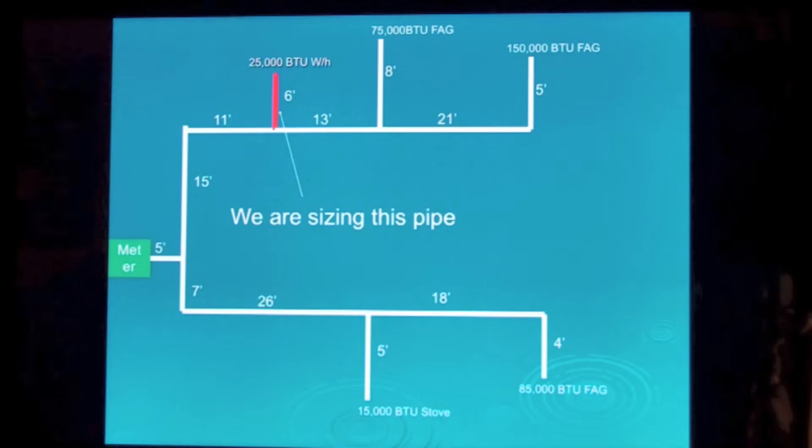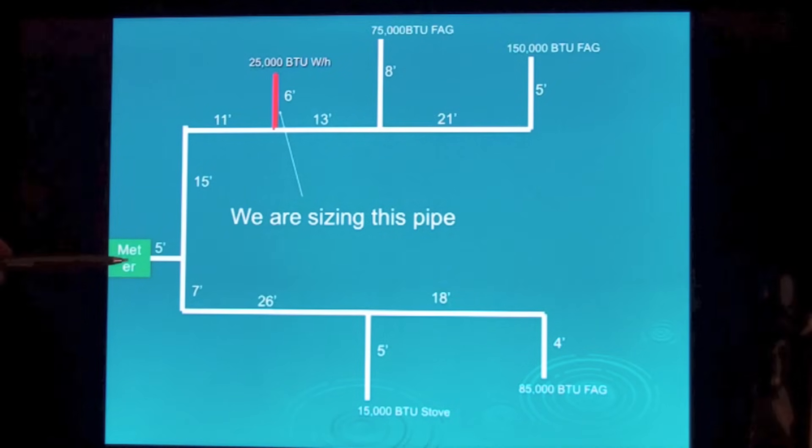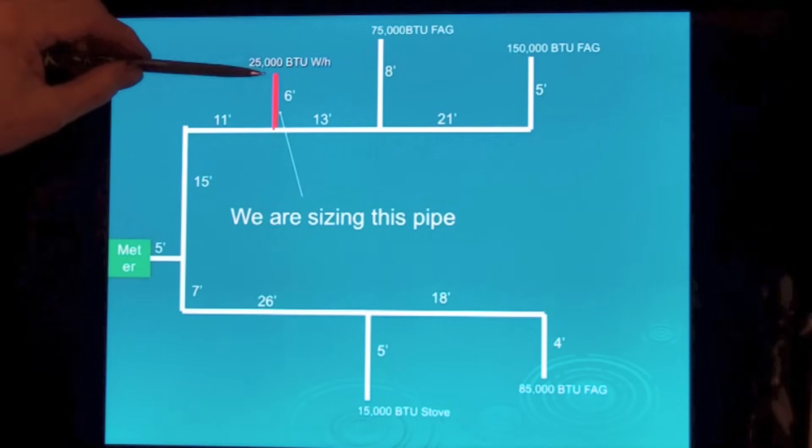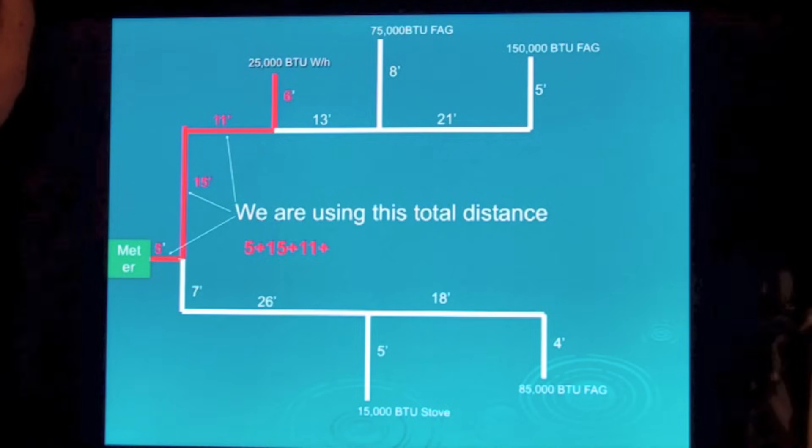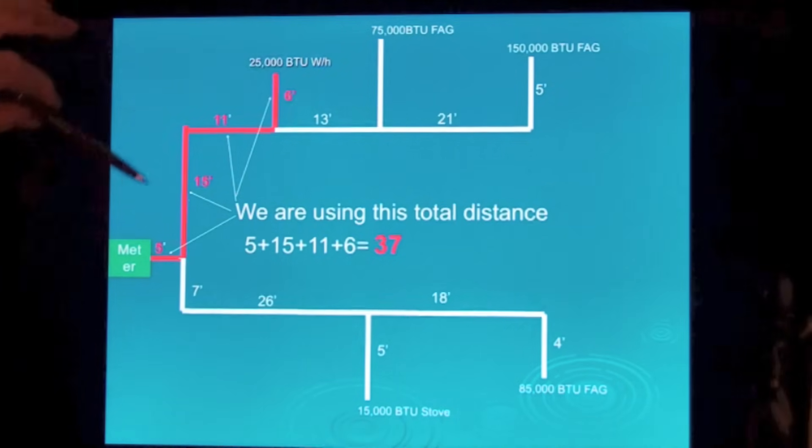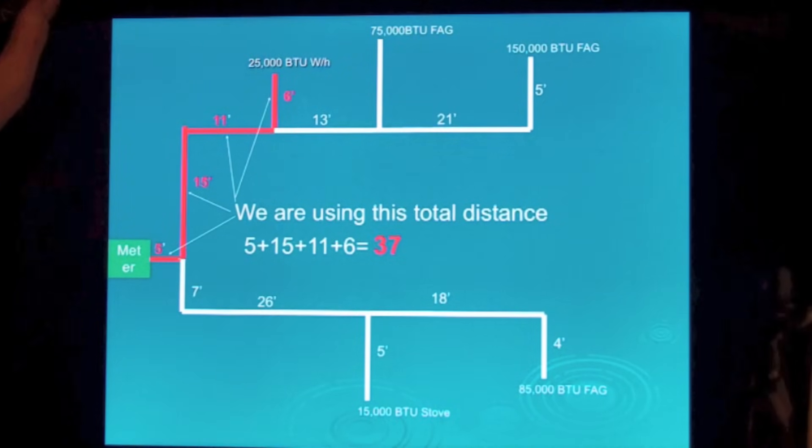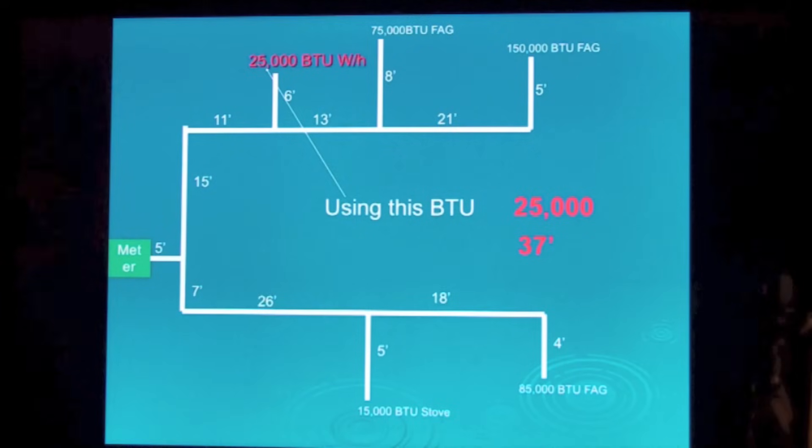Now when I size this pipe, it's like this pipe from here all the way to the meter is a separate pipe. Now I'm only sizing this because I've already sized these others. But we're going to use this length. Five foot, fifteen, eleven, and six. So this is the length that we're going to use. Thirty-seven. And how many BTUs are coming out of it? Twenty-five. So twenty-five thousand, thirty-seven feet.